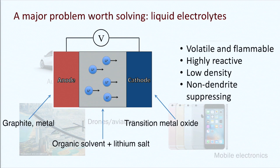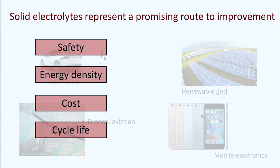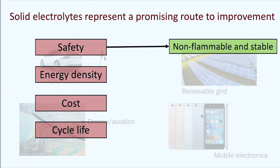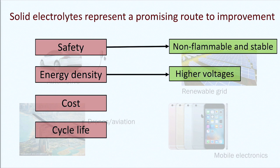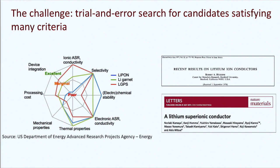What we're working on is: can we take a solid material and replace that liquid? Hopefully a solid that allows us to have all the benefits of the liquids without any of the major problems. Solids can help because they're typically less flammable and much more stable; they could enable higher voltages for more energy density; if made from abundant materials, we could see cost improvements; and they can suppress dendrites, improving cycle life.